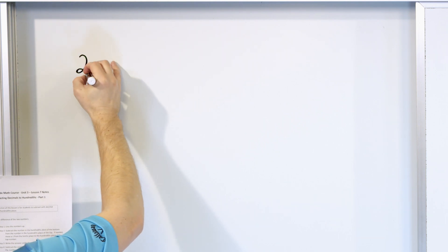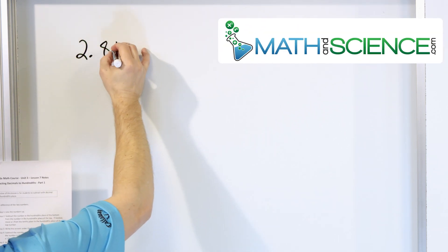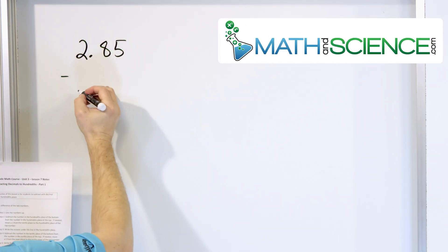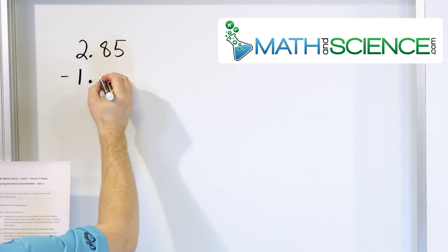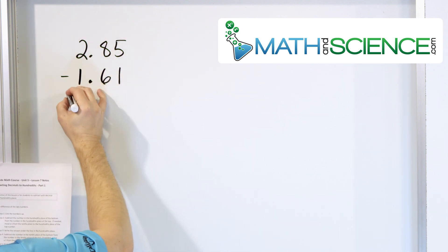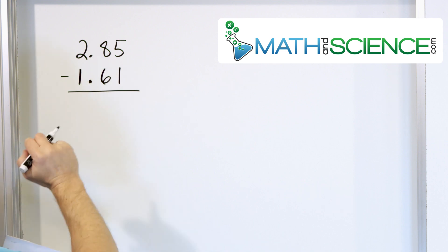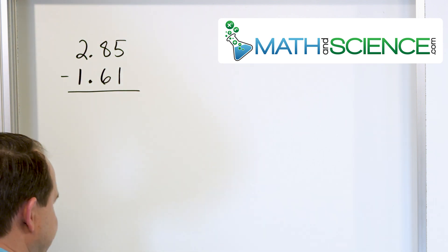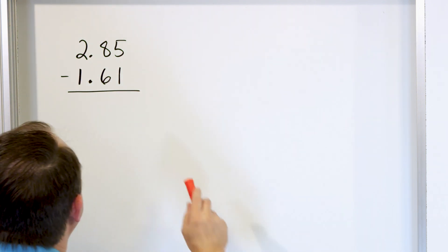Let's say we have 2.85, and we're going to subtract from that 1.61. Notice the decimals are lined up — that's all we have to make sure of. Then we begin on the right.